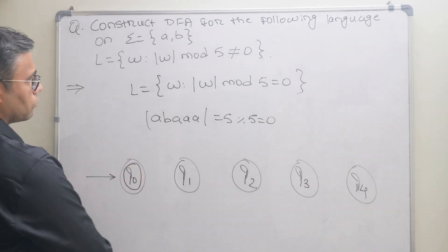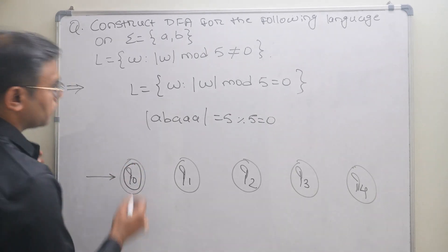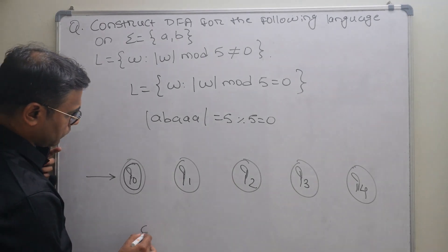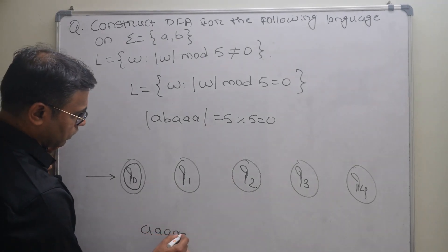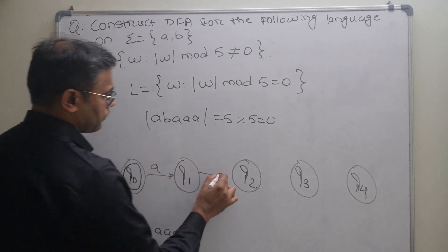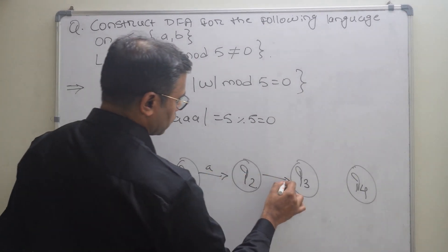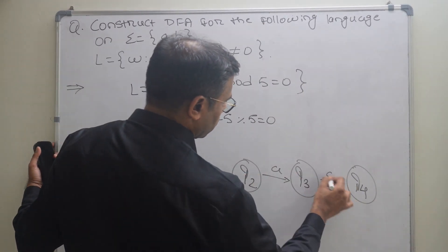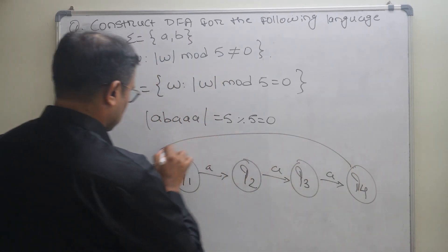If we take any string generated from a, b, and if there are 5 times a, we will write here: first a, second a, third a, fourth a, and this will be the fifth a.